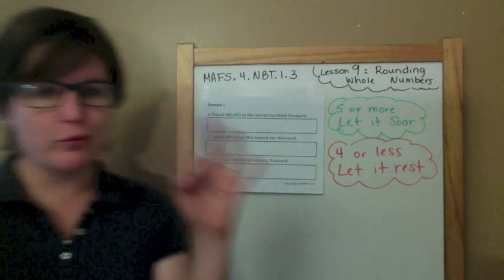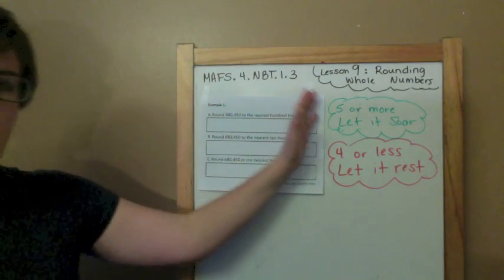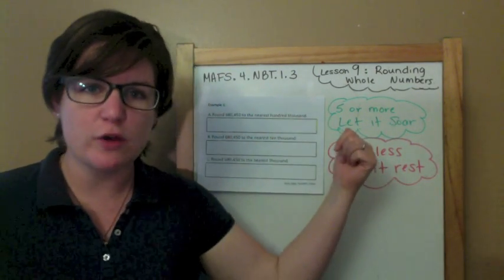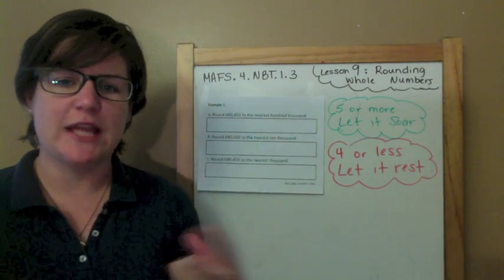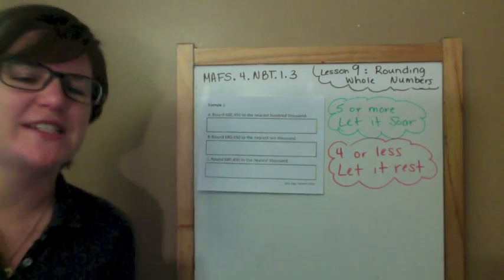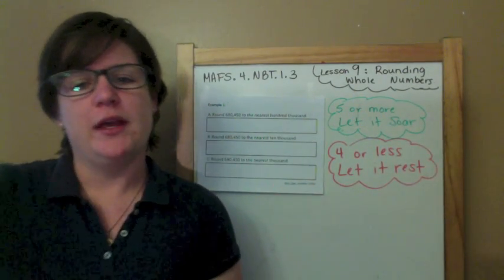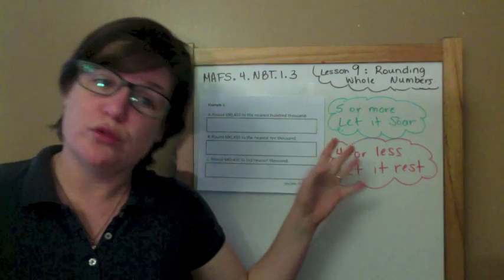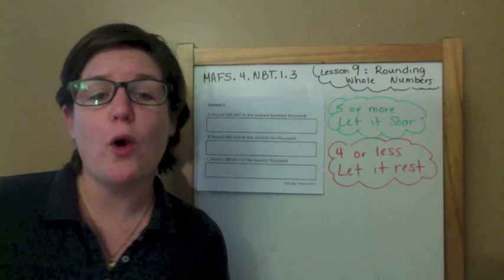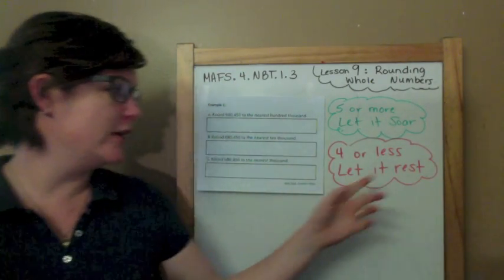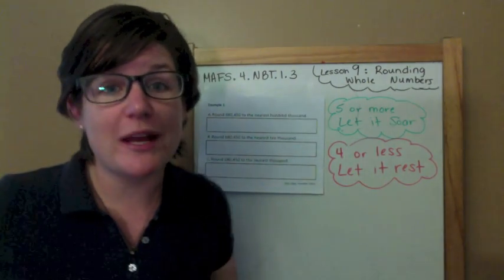We're on example one, and this is a three-part equation editor response. Before we begin, let me go over this rule: "Five or more, let it soar; four or less, let it rest." And we're going to sing them. So if we see five or more, we say: "Five or more, let it soar." And if we have four or less, we say: "Four or less, you better let it rest."